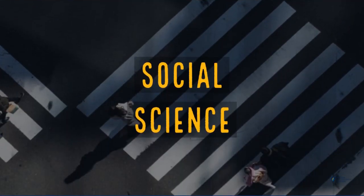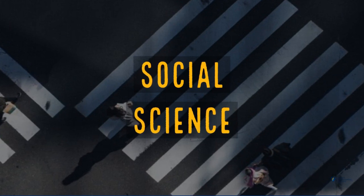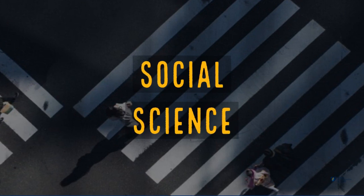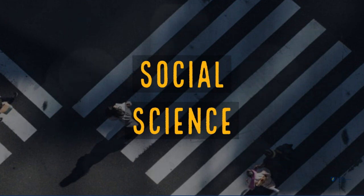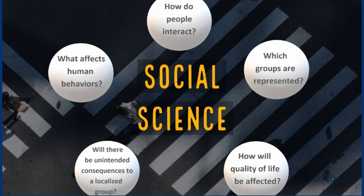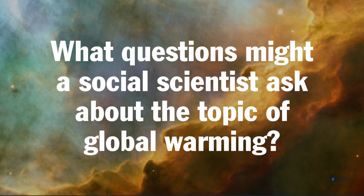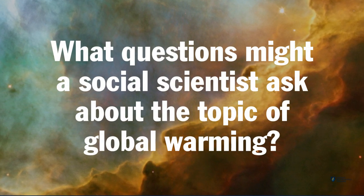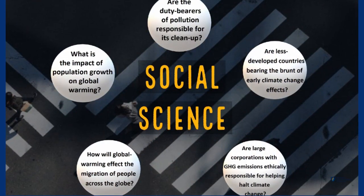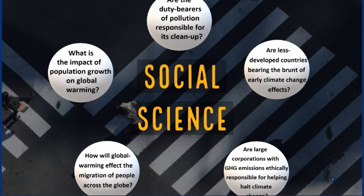The fourth and final lens we'll consider is social science. Studies like anthropology, psychology, economics, and sociology all fit in this category. This lens is also the most likely to intersect or overlap with the other three. Questions in the social science lens will be about people, behavior, and the systems in which we live. Consider pausing the video and writing down some questions a social scientist might ask about global warming. Social scientists may ask: what is the impact of population growth on global warming, and are less developed countries bearing the brunt of early climate change effects?